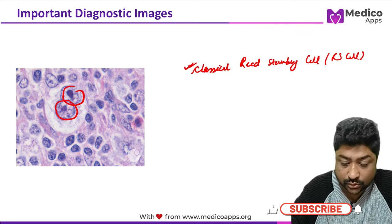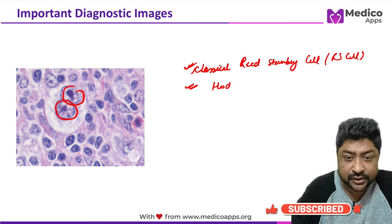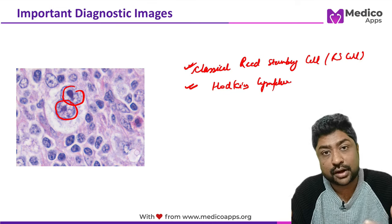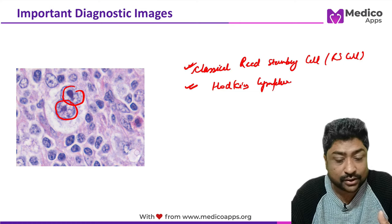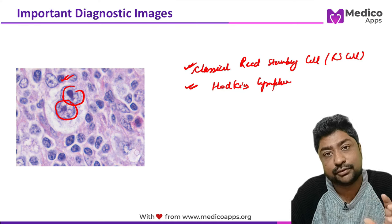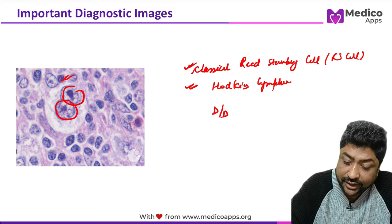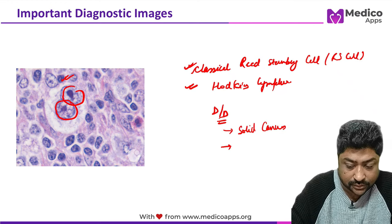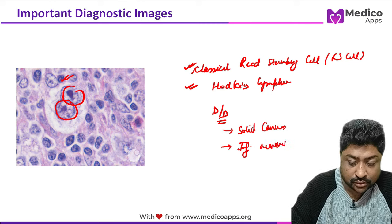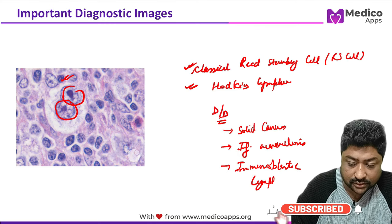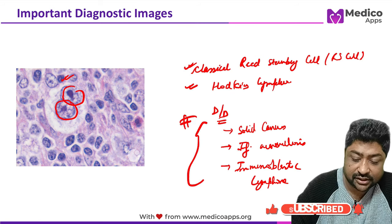This is the classical Reed-Sternberg cell, also called the RS cell. It looks like an owl eye and is seen in Hodgkin's lymphoma. RS cells have various subtypes: pleomorphic, lacunar, popcorn, and mummy. The RS cell is also a differential in solid cancers, infectious mononucleosis, and immunoblastic lymphoma.